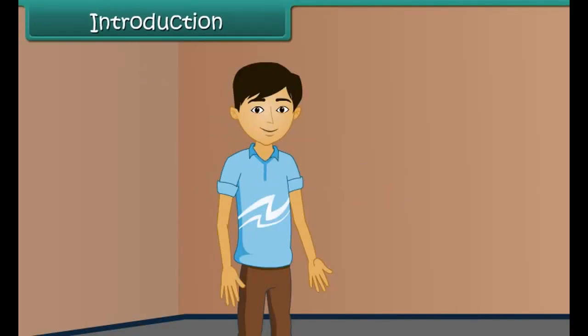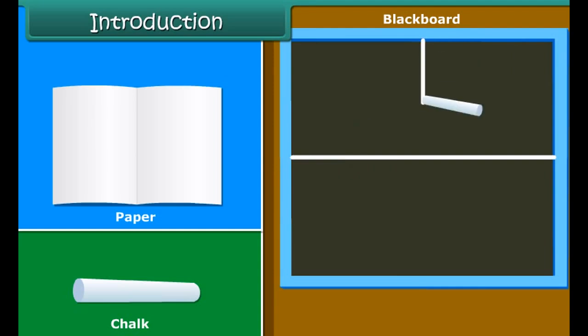Hello children, you may have found that on folding or cutting some objects like blackboard, chalk, paper along a particular line, we get two identical halves. These objects are called symmetrical and the line along which the object is folded is called the line of symmetry. Today let us learn more about symmetry.